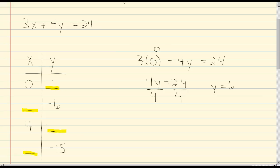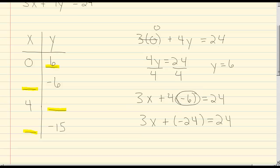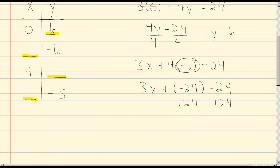So when x is 0, y is going to equal 6. Next, we're given a value of negative 6 for y, so we're going to plug in negative 6 for y and solve for x. 4 times negative 6 would be negative 24, so we get 3x plus negative 24 equals 24. Adding 24 to both sides gives us 3x equals 48. Dividing both sides by 3, we get x equals 16. So we fill in our x value with 16.